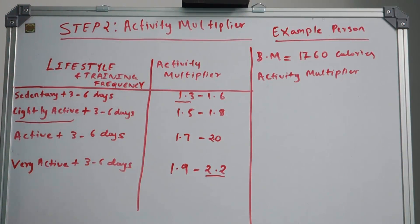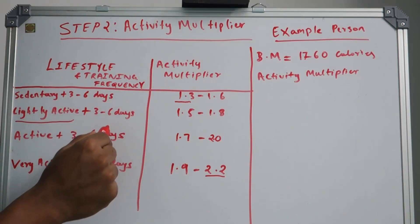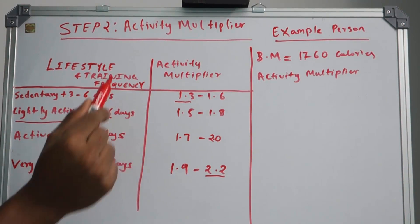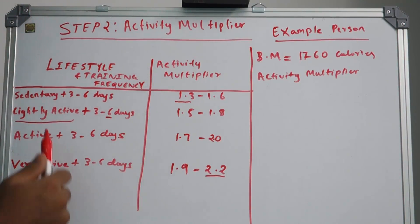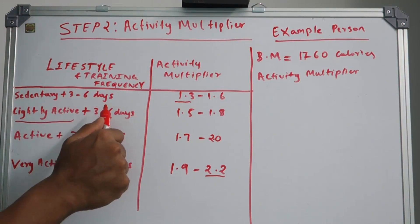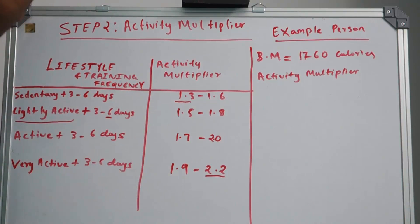I train 6 days a week, so lightly active plus 6 days a week is my lifestyle and training frequency. If you are an engineer with a desk job, then I recommend you choose sedentary plus 3 to 6 days a week.